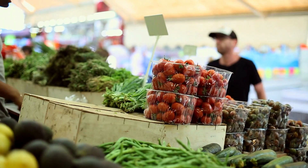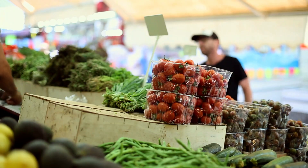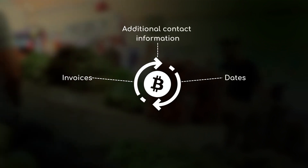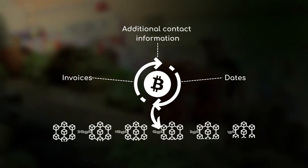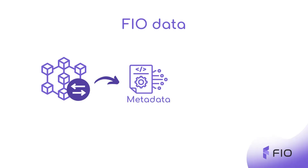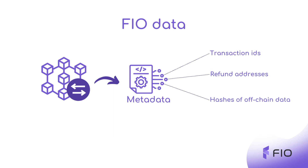FIO data can be especially useful for future decentralized commerce, in which conventional transaction information like invoices, dates, and additional contact information can also be stored on-chain for future audits, with full auditability and encryption between counterparties. FIO data can also include metadata related to a native blockchain transaction, such as transaction IDs, refund addresses, and even hashes of off-chain data.